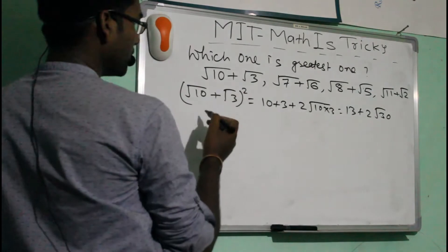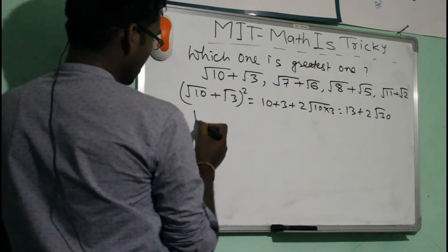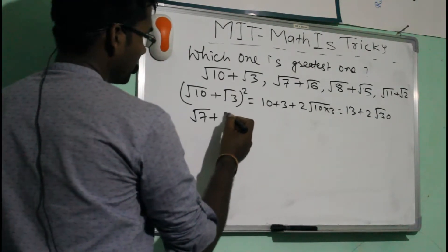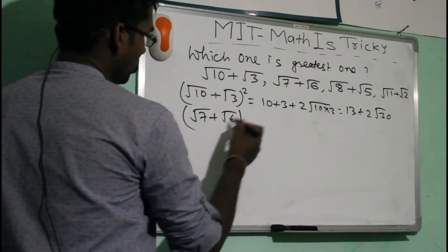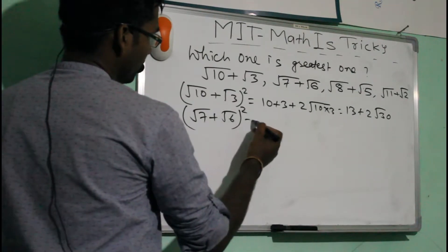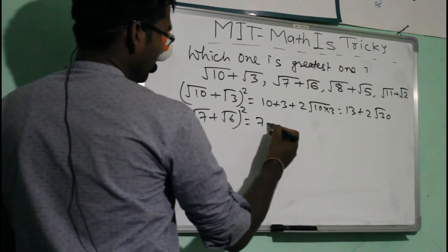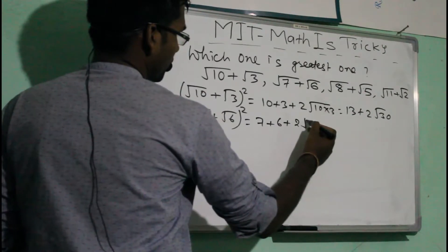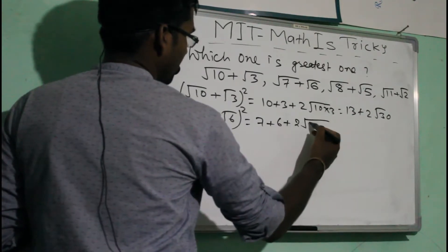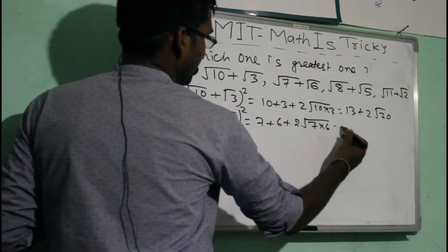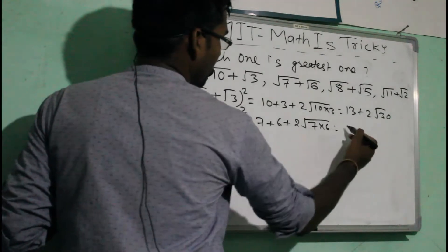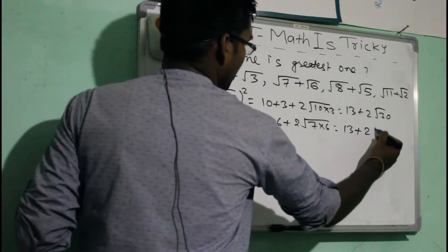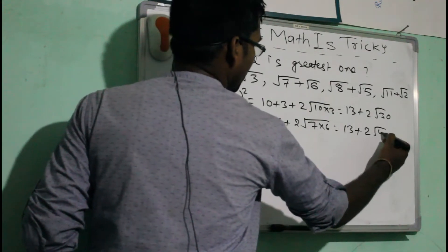For the second expression, (√7 + √6)², we get 7 + 6 + 2×√7×√6, which gives us 13 + 2√42.